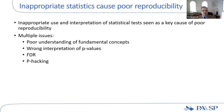It's now generally recognized that inappropriate use and interpretation of statistical tests is one of the key causes of poor reproducibility. That happens at multiple levels: a poor understanding of the fundamental concepts of statistics, a wrong interpretation of p-values, the concept of the false discovery rate (FDR), and the concept of p-hacking.